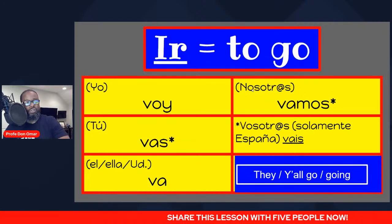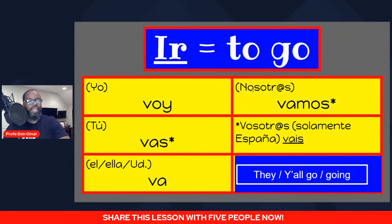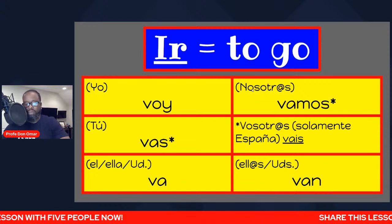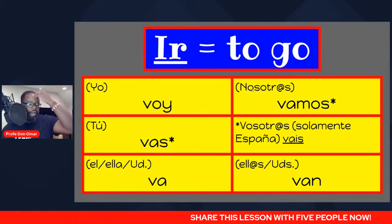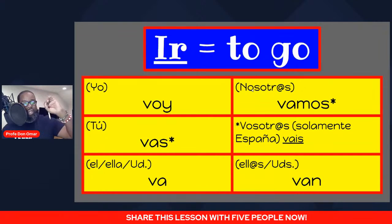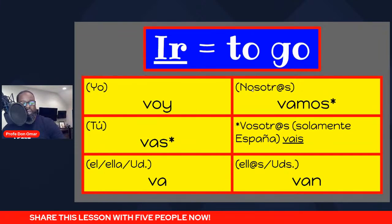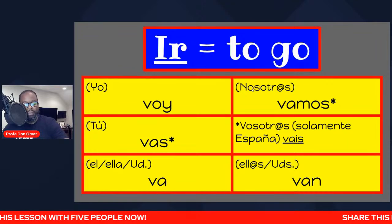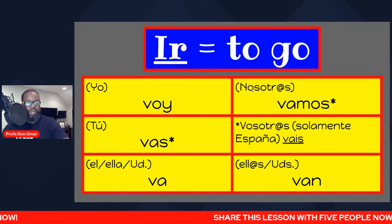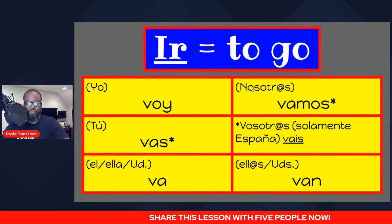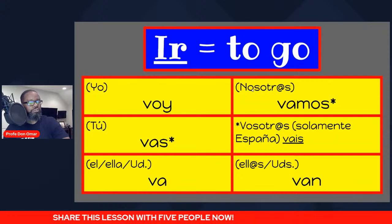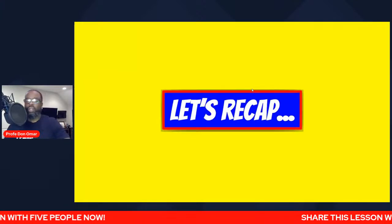Vosotros vais is used only in Spain. Ellos, ellas, ustedes van. Remember ustedes is y'all, used as both formal and informal in Latin America — América Latina. Now let's get a recap here to set you up for success — la fórmula de éxito.